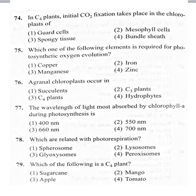In C4 plants, initial carbon dioxide fixation takes place in the chloroplasts of: option one, guard cells; option two, mesophyll cells; option three, spongy tissue; option four, bundle sheath cells. There are two different types of cells in C4 plants regarding photosynthesis: mesophyll cells and bundle sheath cells.